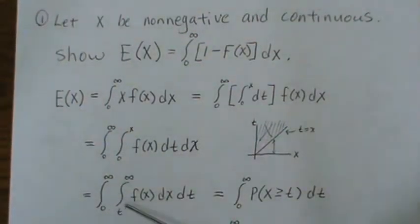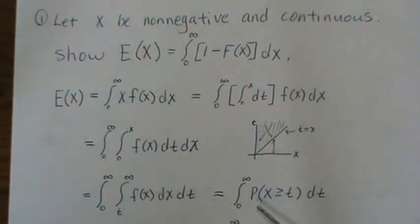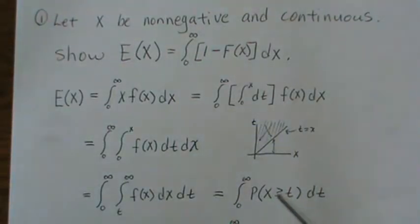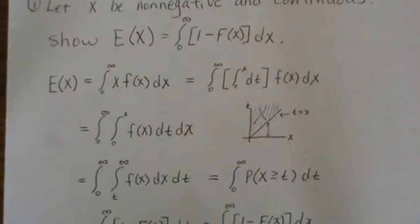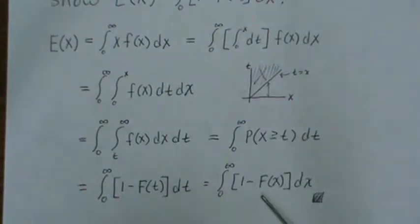After switching the order, the inner integral of f(x) dx from t to infinity is just the probability that x is greater than t. In the continuous world the equal sign doesn't really play a part, so that equals 1 minus F(t). Since t is just a dummy variable, we can replace it with x, and that's what we were here to show.